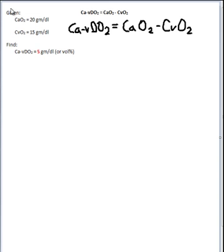So using fairly normal values for both of these, which we calculated earlier, we can plug them in to see what we will get for a normal AV content difference. So 20 minus 15 is going to be equal to 5 volumes percent, which is essentially the normal ABDO2.